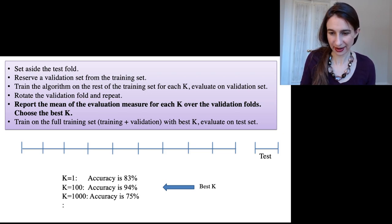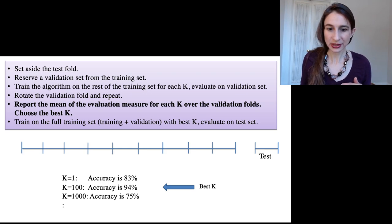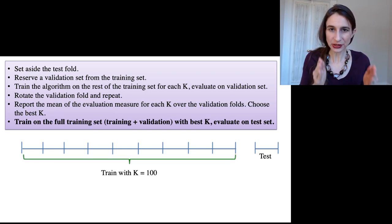So I choose that K, and then I train on the entire training set with that value of K. That's my chosen value of K for this training set for this algorithm.